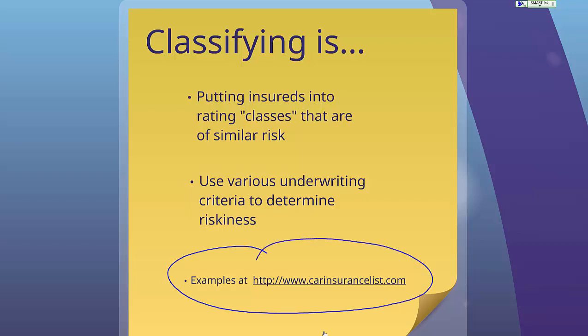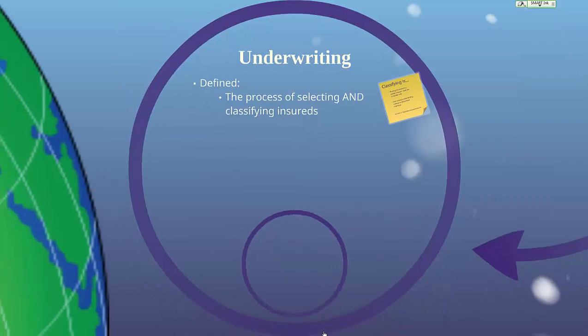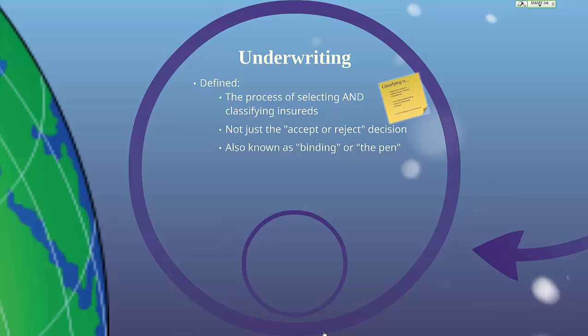Take a look at that article as you might find something in it on your quiz. Underwriting is also not just the accept or reject decision, and it's also known as binding or having the pen. The reason it's called binding is because it binds the insurance company to the risk that the policy is being written upon. So anyone who is an underwriter has binding authority, and insurance agents sometimes also have binding authority, as we discussed in the last lecture.